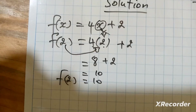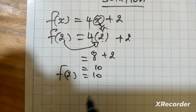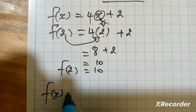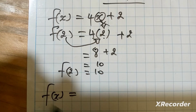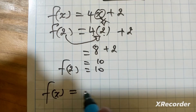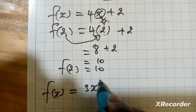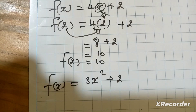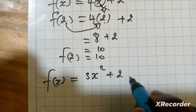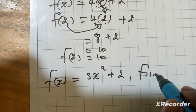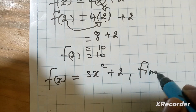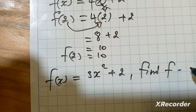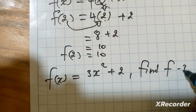As a second example, you can have f of x which is equal to 3x squared plus 2. And we are asked to find f of negative 3.